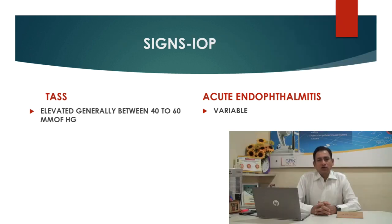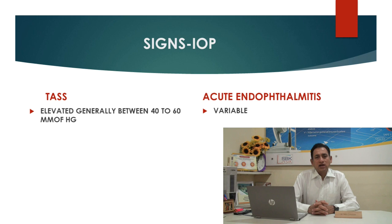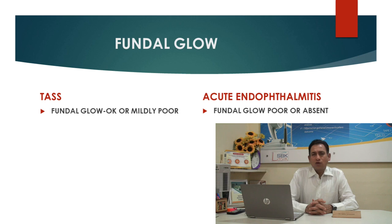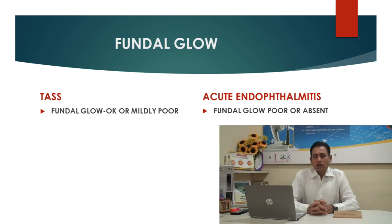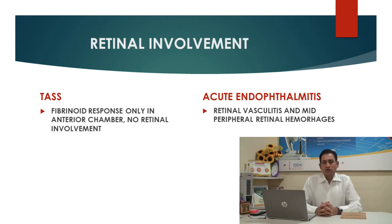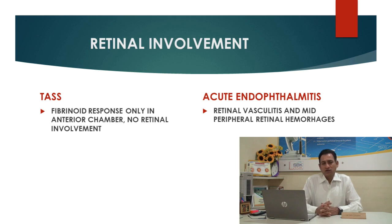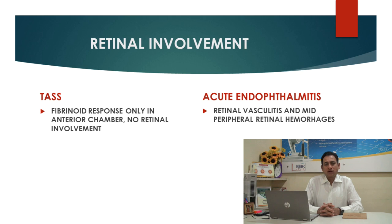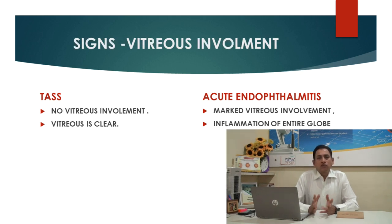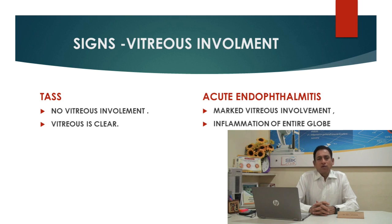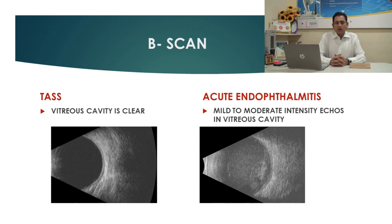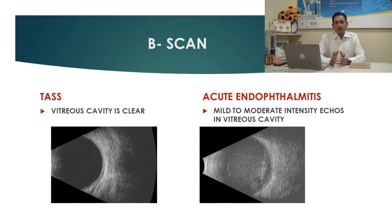Intraocular pressure in TASS is usually on the higher side — sometimes it can go as high as 40 to 60 mmHg. IOP in endophthalmitis is usually normal. The fundal glow in TASS will be normal or mildly poor, but in endophthalmitis it will be poor or absent. In TASS, fibrinoid reaction is usually in the anterior chamber with no retinal involvement, whereas in endophthalmitis there will be peripheral retinal hemorrhages in early stages. Vitreous in TASS is usually clear; in endophthalmitis there will be marked inflammation. On B-scan, vitreous cavity is clear in TASS, whereas in endophthalmitis there will be mild to moderate echoes in the vitreous cavity.